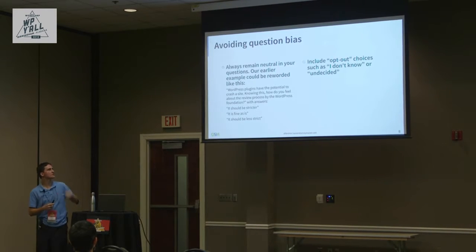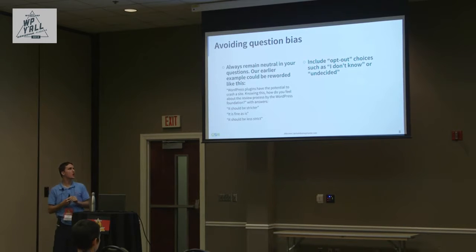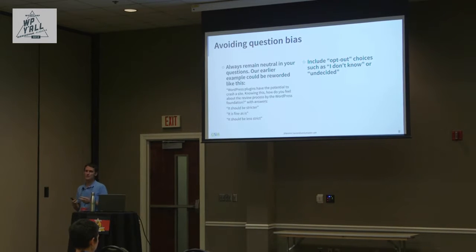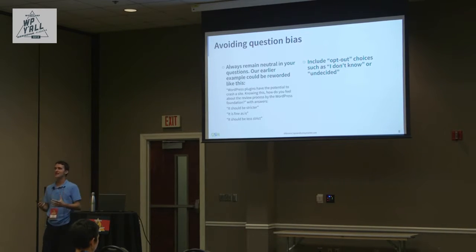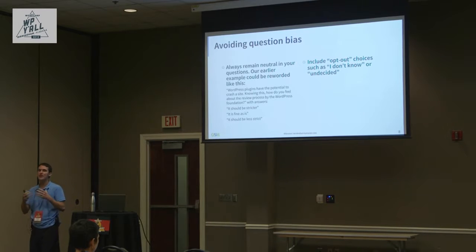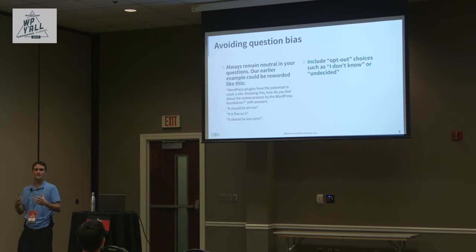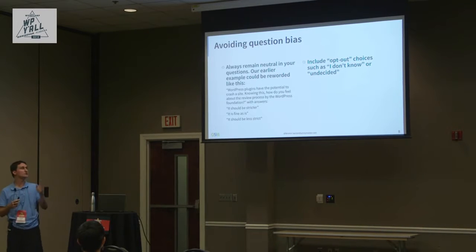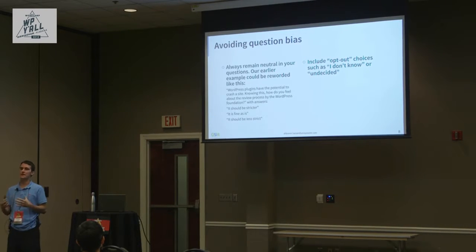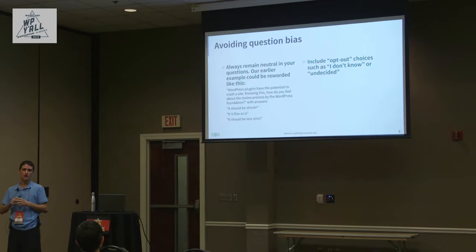You should always try to include some sort of opt-out choice, such as 'I don't know,' 'undecided,' or 'other,' depending on the type of question. You should almost always have something like that to prevent people randomly choosing options.